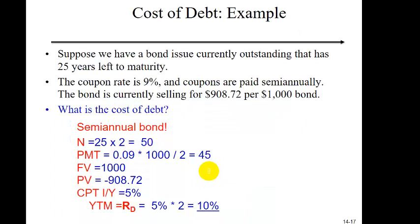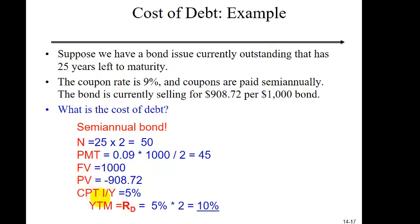Let's practice finding yield to maturity for corporate bonds. Suppose we have a bond currently outstanding with 25 years left to maturity, a coupon rate of 9%, coupons paid semi-annually, and the bond is currently selling for $908.72 per $1,000 face value. What is the cost of debt? For a semi-annual bond, we need to adjust in three places: double the number of coupon payments, split the coupon payment into two halves, and double the interest rate to convert to APR. Here's another practice problem for cost of debt — pause the video and try it.